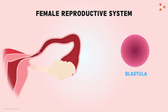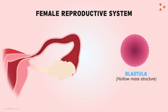This further divides to form a structure called the blastula. So will it have double the number of cells in it? Blastula is just a stage where the cells arrange themselves such that they form a hollow mass structure. In fact, the cells align themselves to the ends and leave a cavity within, which gets filled with fluid.